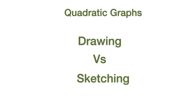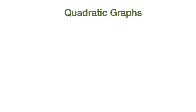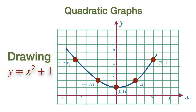Drawing or plotting a quadratic graph is different from sketching it. When the question asks us to draw or plot a quadratic graph, you should make every attempt to make the graph accurate. Therefore, when we drew the graph of Y equal to X squared plus 1 earlier, we needed to calculate the X and Y coordinates and use a scaled axis to make an accurate drawing of the graph.